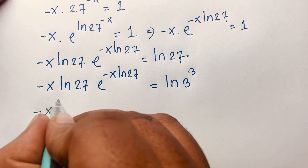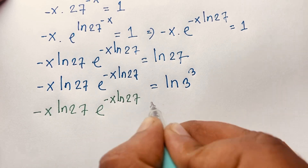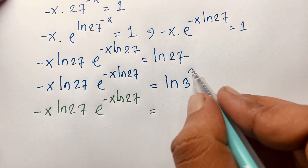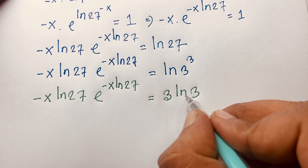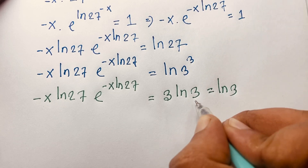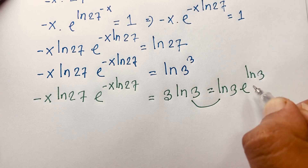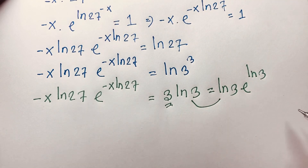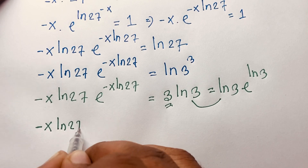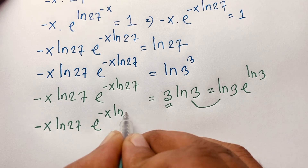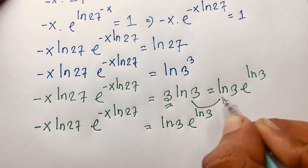So we have (-x·ln27) · e^(-x·ln27) = 3·ln3. Now I rewrite the right side: 3·ln3 = ln3 · e^(ln3), since e^(ln3) = 3. So the expression becomes (-x·ln27) · e^(-x·ln27) = ln3 · e^(ln3).